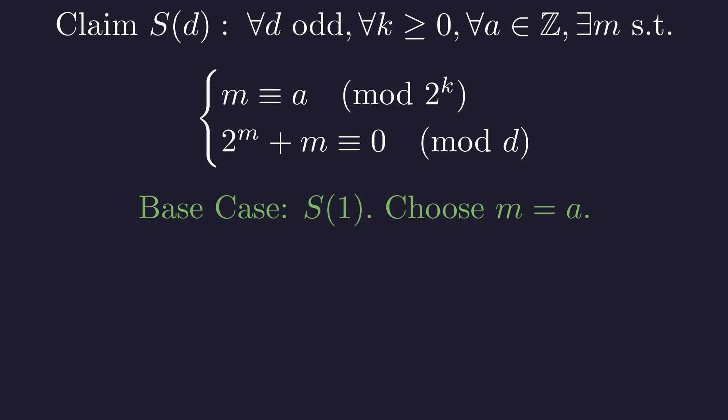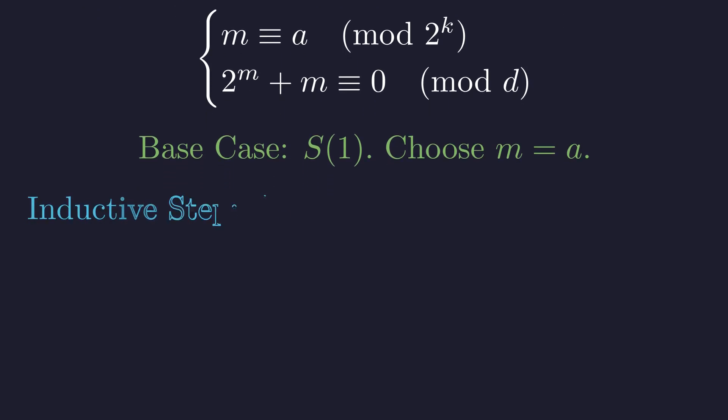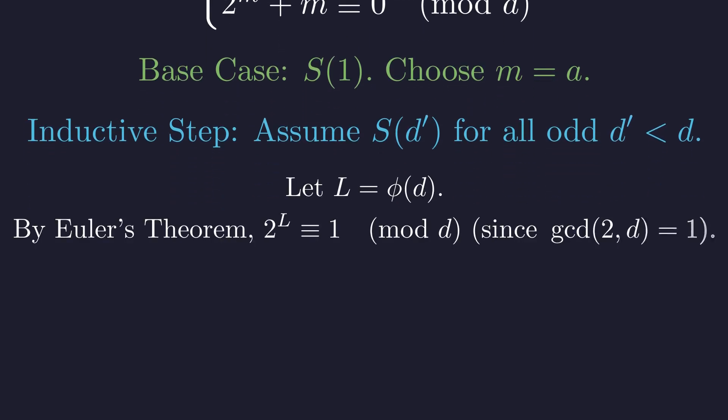The base case, d equals 1, is trivial. The second congruence is modulo 1, so we simply choose m equals a. Now, we assume our claim is true for all odd integers smaller than d. Let L be phi of d.